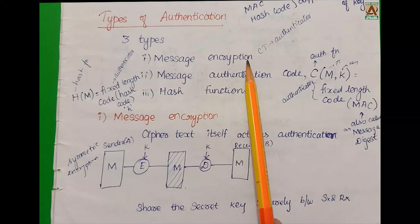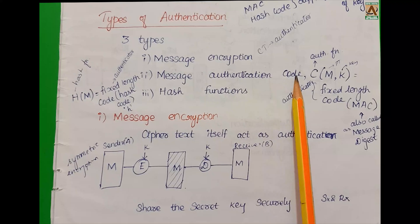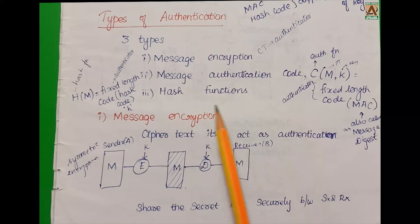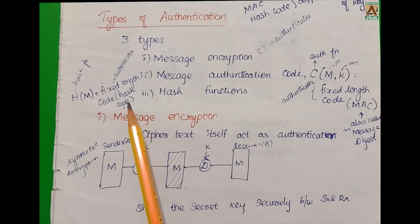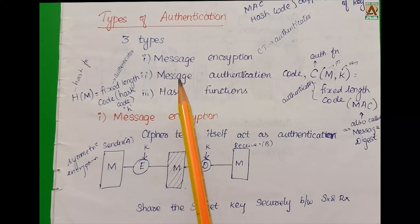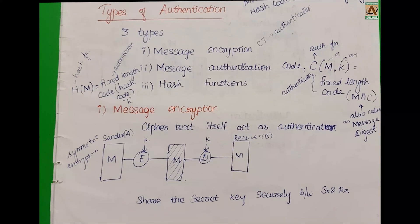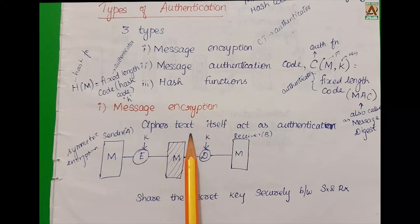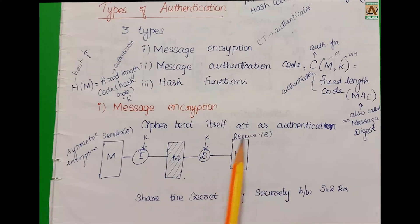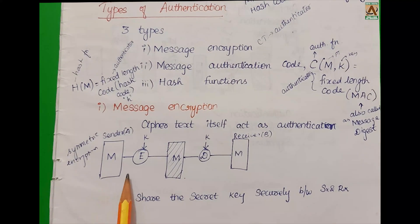In summary: for Message Encryption, the Ciphertext is the authenticator. For Message Authentication Code, the MAC code is the authenticator. For Hash Function, the Hash Code is the authenticator. In Message Encryption, the ciphertext itself acts as an authenticator.